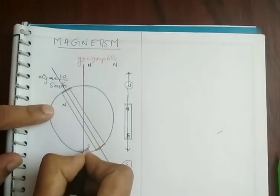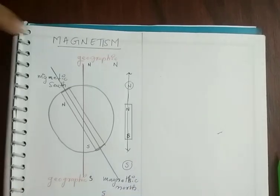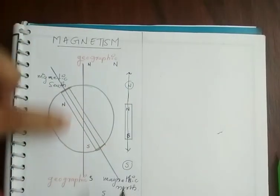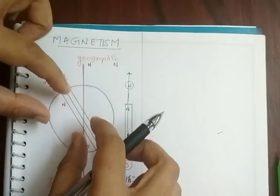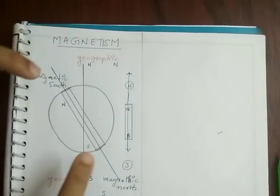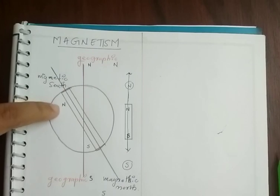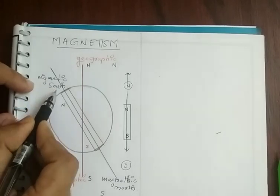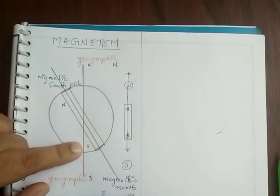In the magnetic meridian, when the bar magnet aligns itself, the north pole of the bar magnet faces towards the magnetic south of the earth, and the south pole of the bar magnet aligns towards the magnetic north of the earth.